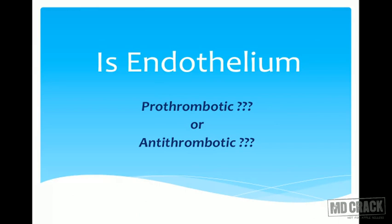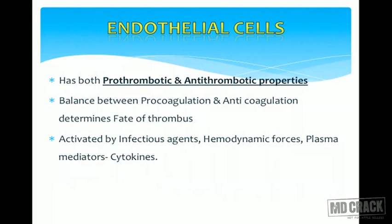The endothelium has both pro-thrombogenic and anti-thrombogenic characteristics. A perfect balance is always maintained between pro-thrombotic and anti-thrombotic activity — that is how blood is maintained at fluid status. This balance determines the fate of a thrombus. Endothelial cells are activated by various factors such as infectious agents, hemodynamic forces, and plasma mediators like cytokines.